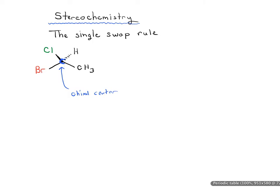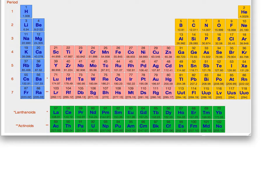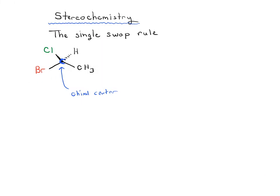We need to be able to determine whether this chiral center is R or S. If you remember how we do that, we look at the atoms directly attached to the chiral center and evaluate which has the highest atomic number. For the ones we're dealing with here: bromine is 35, chlorine is 17, carbon is 6, and hydrogen is 1.